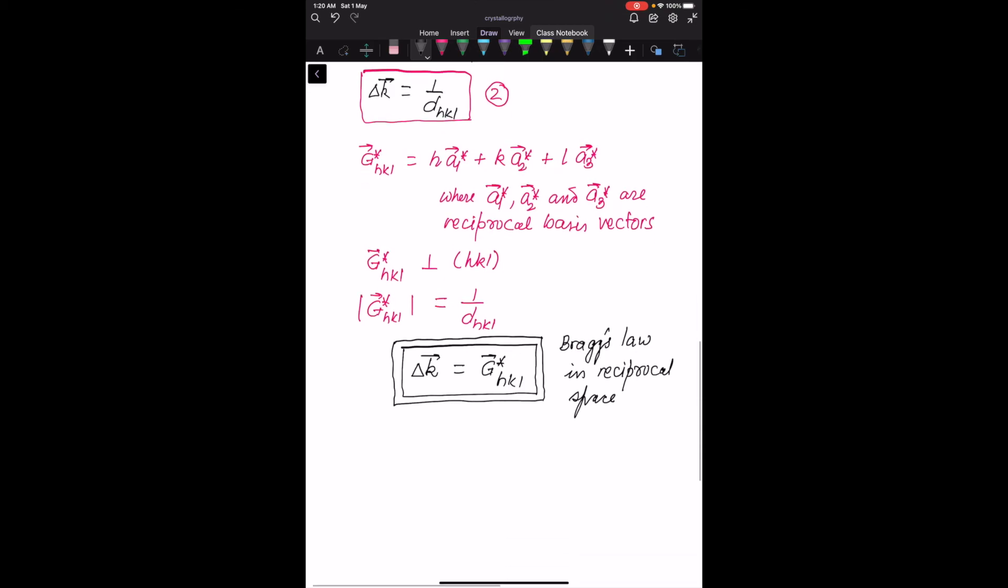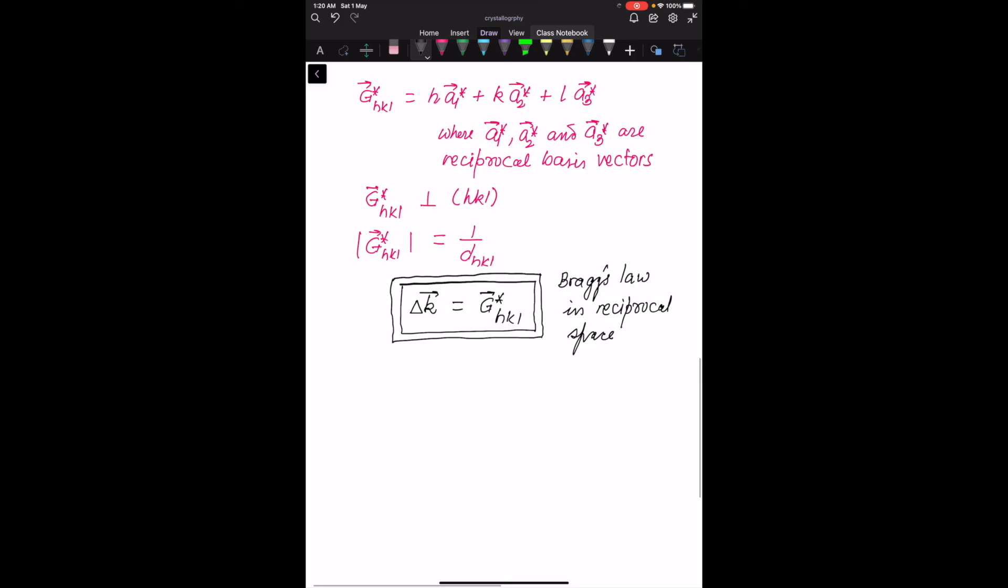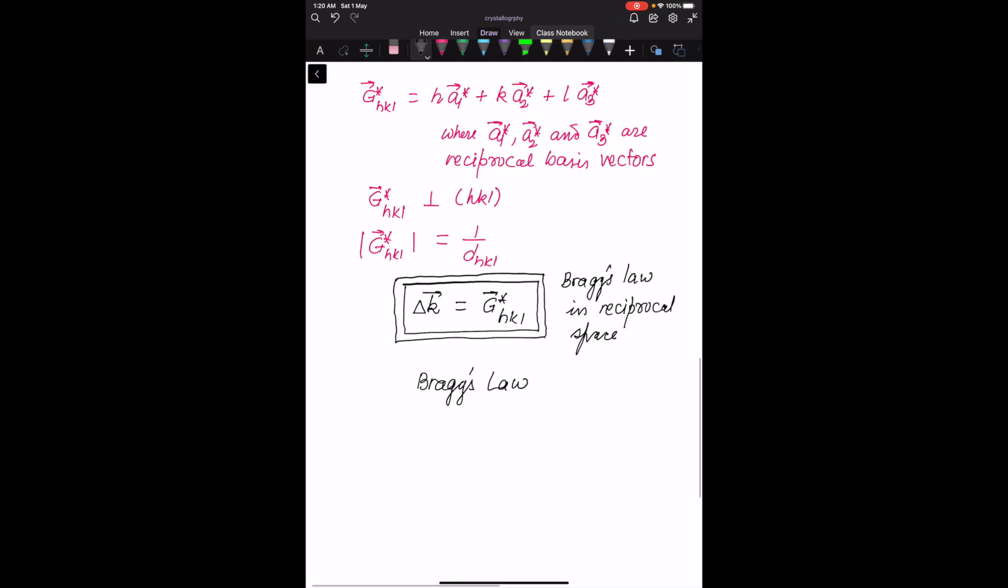Just to conclude, let me reiterate that we now have two equivalent formulations of Bragg's law. One is in real space, another is in the reciprocal space. In real space, lambda equals 2 d_HKL sin theta. In reciprocal space, we have delta K equals G star HKL. The real space is formulated in terms of scalars, while the reciprocal space is formulated in terms of vectors.